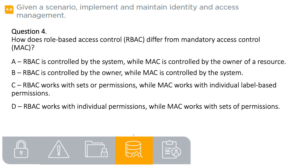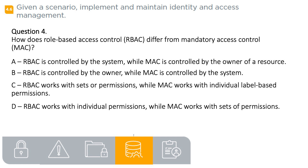Question 4. How does role-based access control (RBAC) differ from mandatory access control (MAC)? A. RBAC is controlled by the system while MAC is controlled by the owner of a resource. B. RBAC is controlled by the owner while MAC is controlled by the system. C. RBAC works with sets of permissions while MAC works with individual label-based permissions. D. RBAC works with individual permissions while MAC works with sets of permissions. The answer is C. RBAC works with sets of permissions based on a role in the company, whereas MAC works with individual label-based permissions.